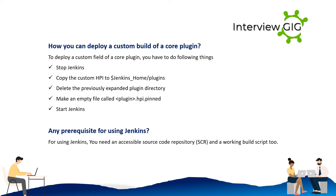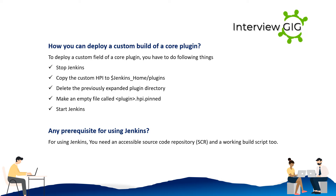How can you deploy a custom build of a core plugin? To deploy a custom build of a core plugin you need to: stop Jenkins, copy the custom .hpi file to $JENKINS_HOME/plugins, delete the previously expanded plugin directory, make an empty file called plugin.hpi.pinned, and then start Jenkins.